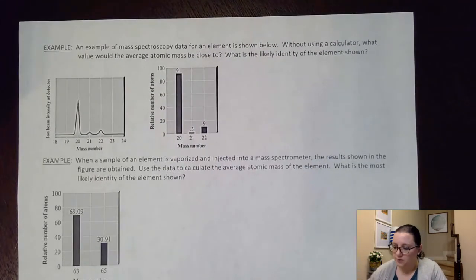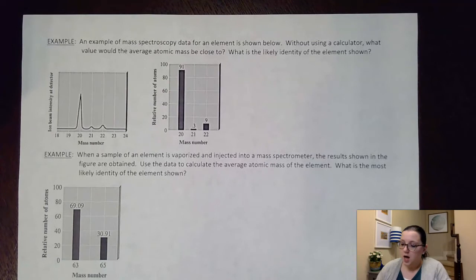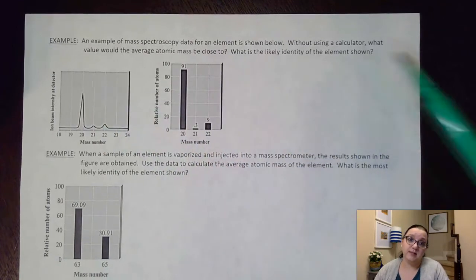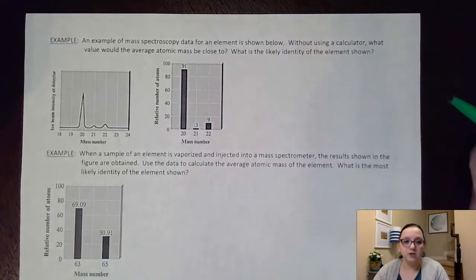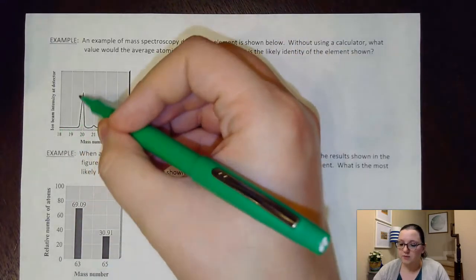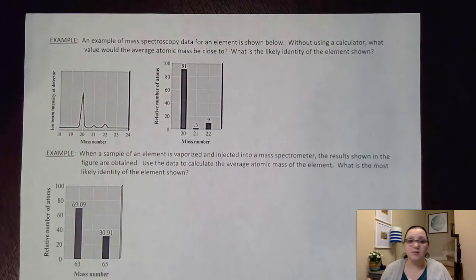So again, we have here some mass spectroscopy data for an element. These are kind of showing you two different formats that our mass spec data could have. Sometimes they'll show us bar graphs for our information, where other times, they'll show us kind of a line graph that has peaks. I've seen both of these on questions. It kind of just depends on what you're looking at. So just be prepared to see both. It's the same information, just being presented two different ways.